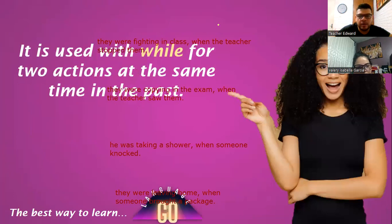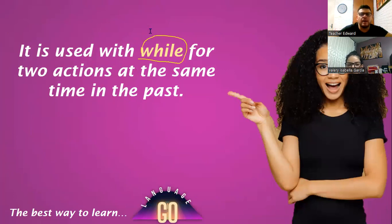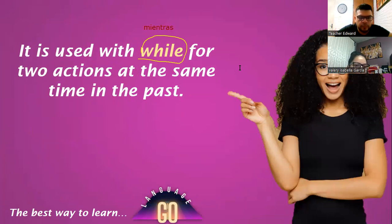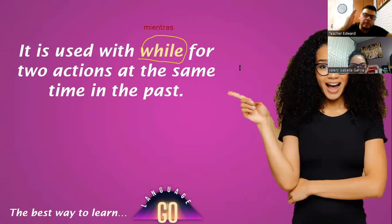We have finished with 'when' — when is for an action in the past interrupted by another. But now I have another word: 'while.' It is used with 'while' for two actions at the same time in the past. These two actions are simultaneous actions.